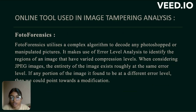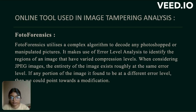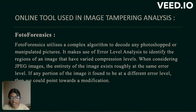Now, the online tool used for image tampering analysis is the Photoforensic tool. Photoforensic utilizes a complex algorithm to decode any photoshopped or manipulated picture. It makes use of error level analysis to identify regions of an image that have varying compression levels. When considering a JPEG image, the entirety of the image exists roughly at the same error level. If any portion of an image is found to be at a different error level, that could point toward a modification.